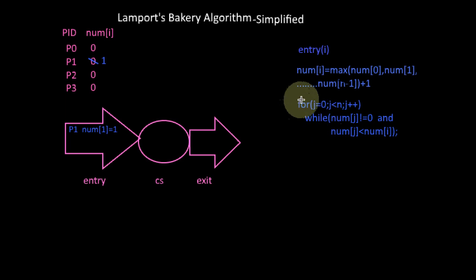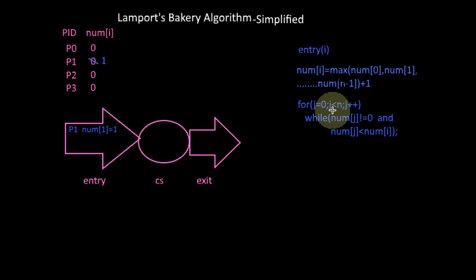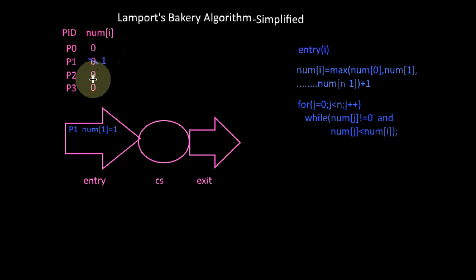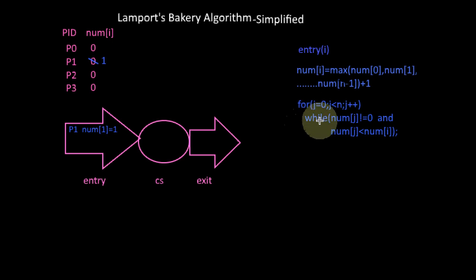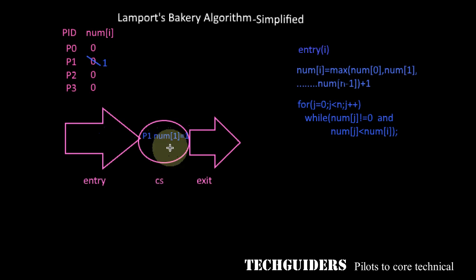Next is condition checking. Process P1 will check whether for any other process there is a process whose number is not equal to zero. In this case there is no such process — for every other process the number is equal to zero. It means no process wishes to enter or is inside the critical section. Hence P1 will skip the while loop and enter the critical section with token number one.